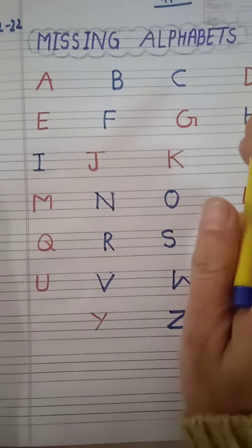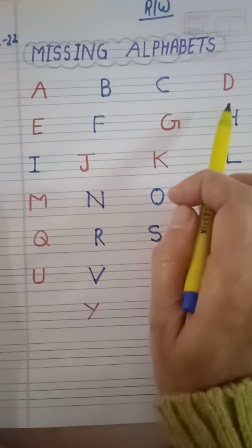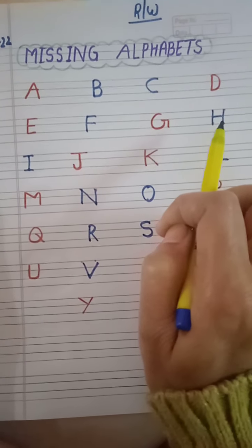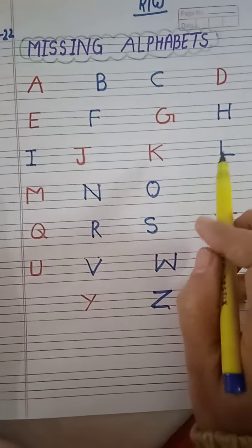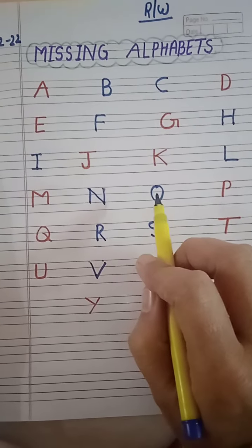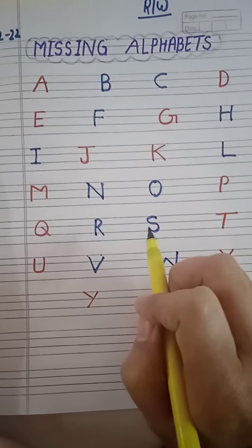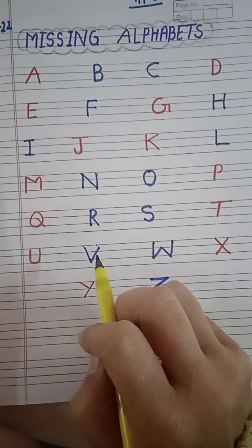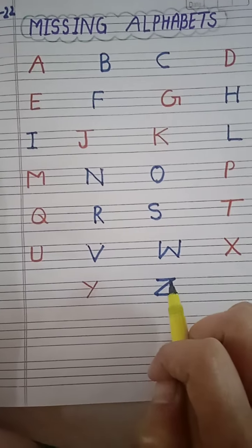Missing alphabet. A, B, C, D, E, F, G, H, I, J, K, L, M, N, O, P, Q, R, S, T, U, V, W, X, Y, and Z.